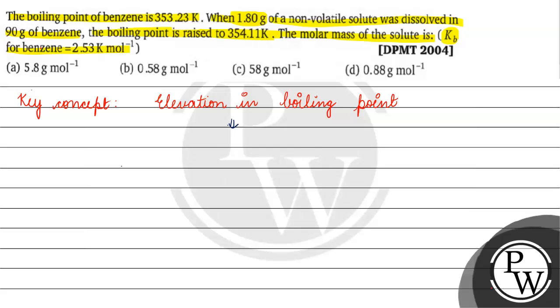If we talk about boiling point, boiling point is that temperature at which vapor pressure equals the atmospheric pressure. If vapor pressure is lowered, then the boiling point will increase. If we talk about elevation in boiling point, what do we need to see?